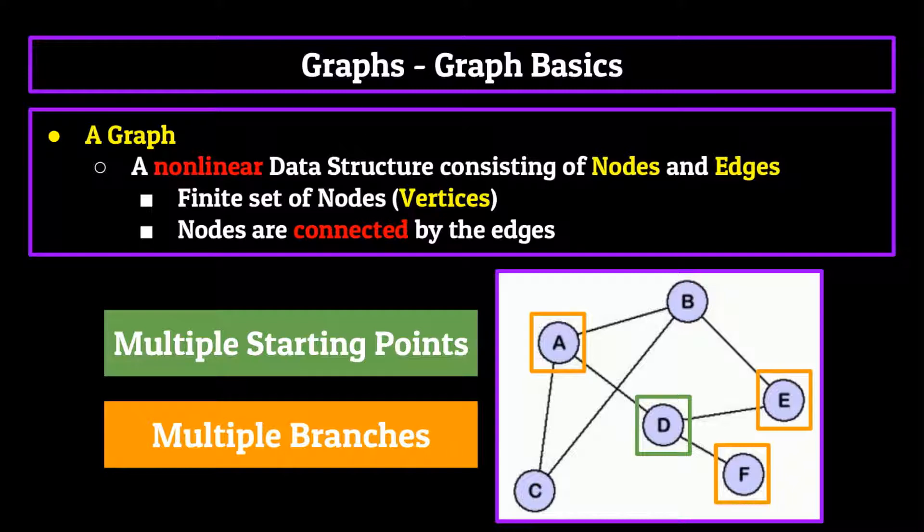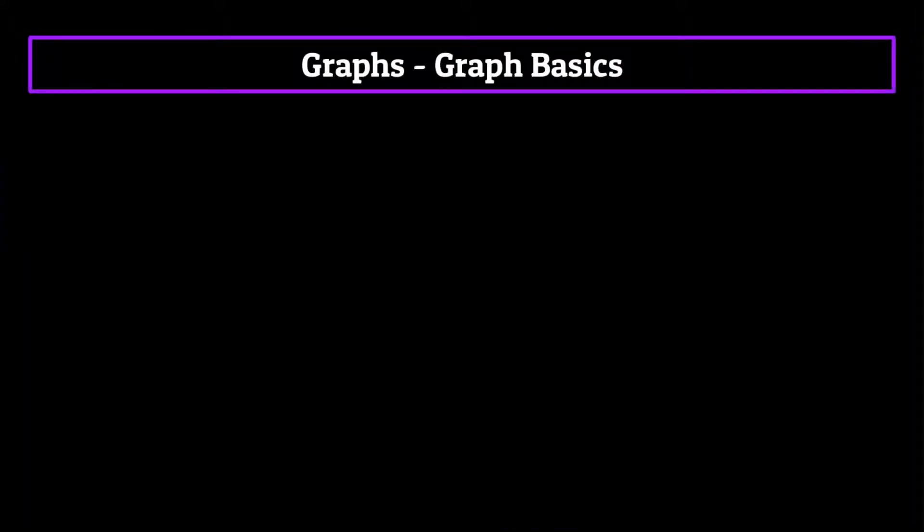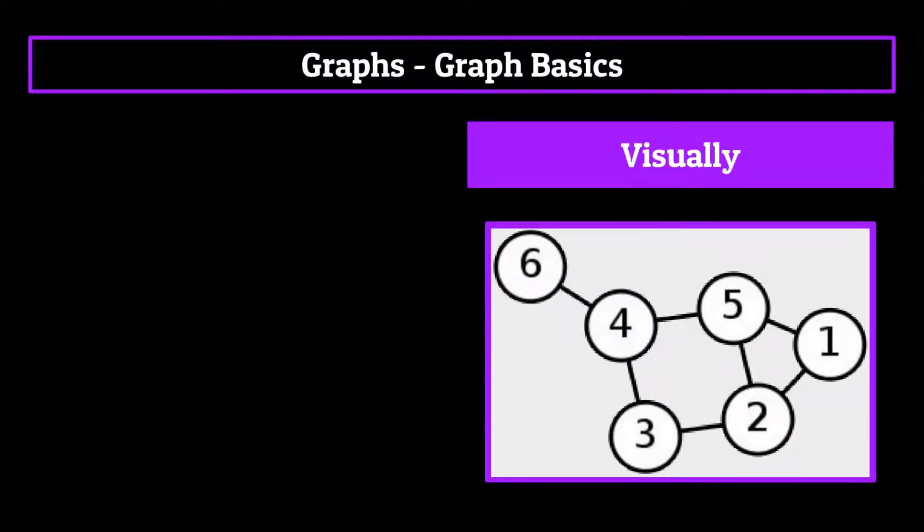Before we get into anything too crazy, though, like the difference between directed and undirected graphs or acyclic versus cyclical graphs, let's get the basics down. Now every graph is composed of these nodes or vertices and the edges that connect them. Let's pull up a sample graph and talk about it. Now we represent graphs visually like this a lot because it makes it way easier to understand.